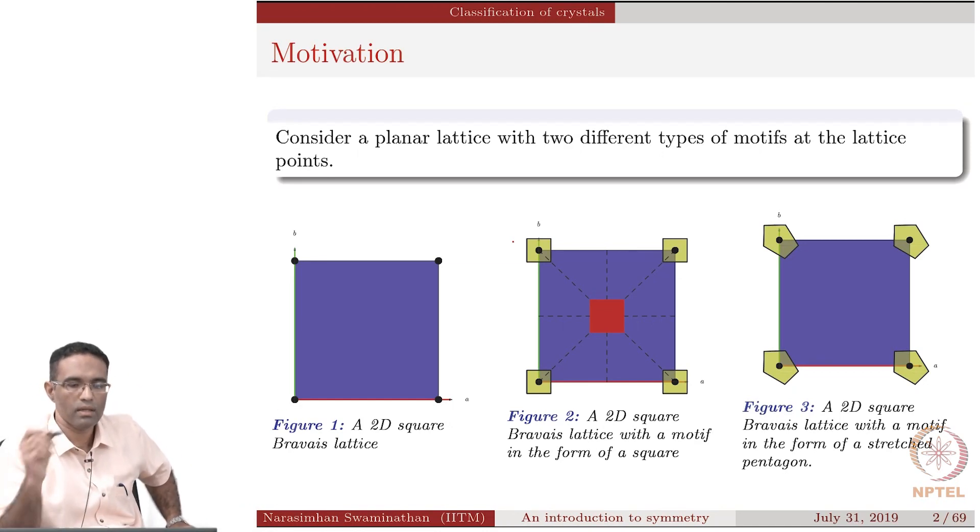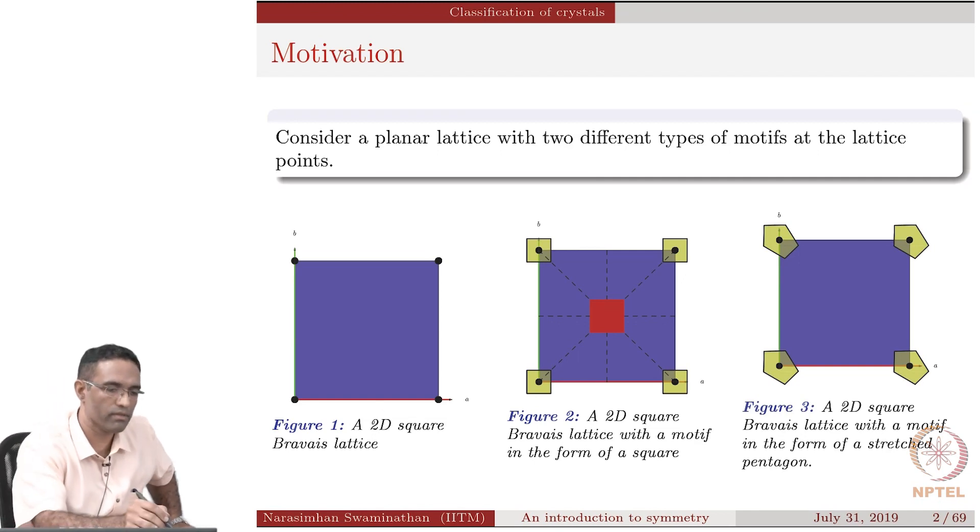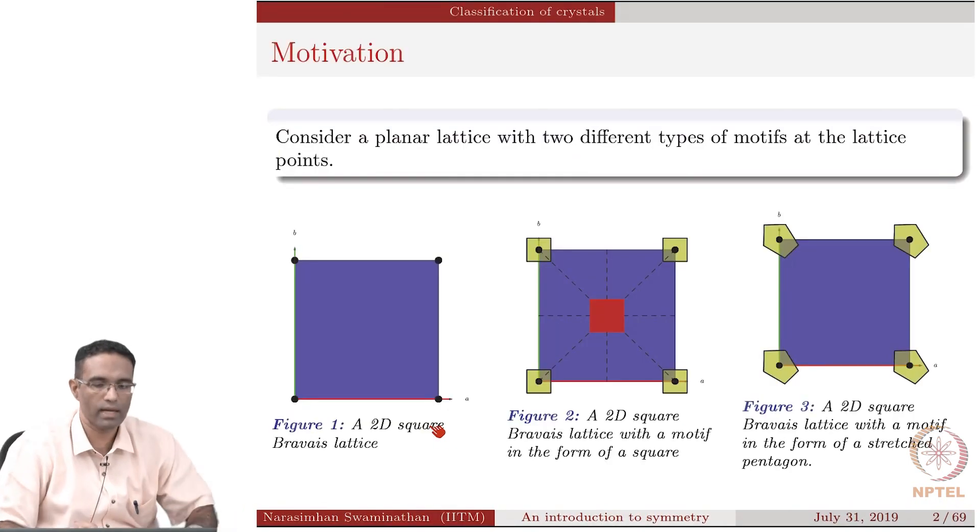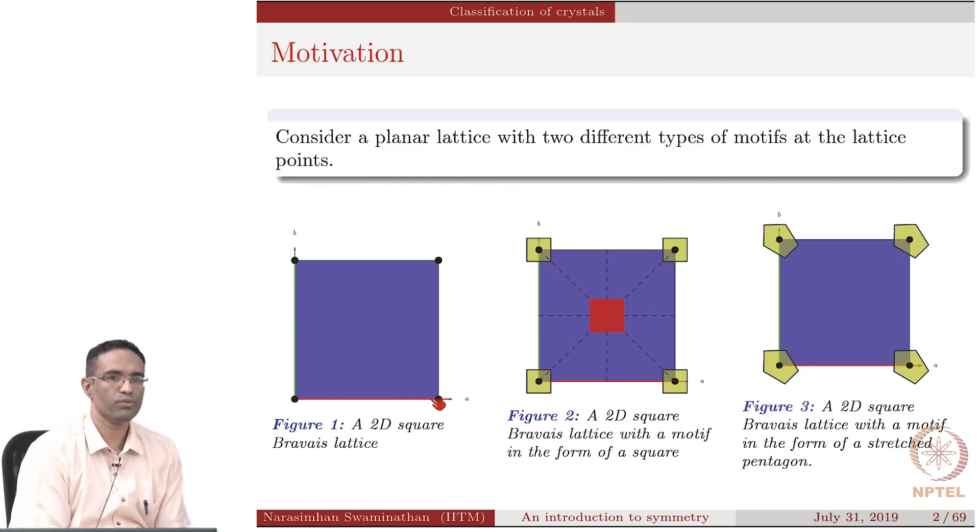Let us take a look at a planar lattice. This is the planar lattice that we are talking about, this is the planar 2D square planar lattice. How many lattice points are there here? One lattice point is there here and at each lattice point I am going to place an object that looks like this.